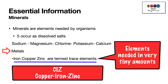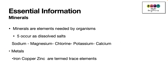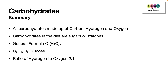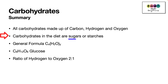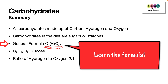Now let's move specifically on to carbohydrates and write some summary notes. All carbohydrates are made up of the elements carbon, hydrogen, and oxygen. Carbohydrates in the diet are sugars or starches, and they have a general formula which is very important to learn — it's often forgotten.